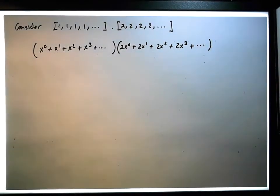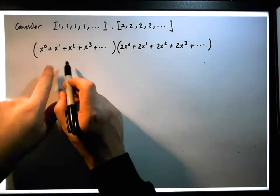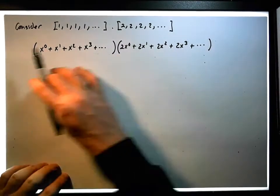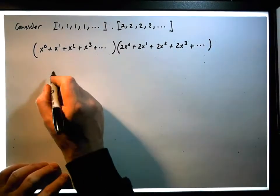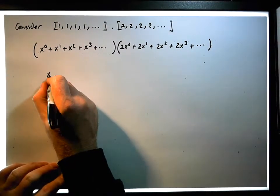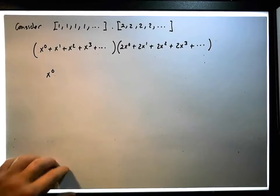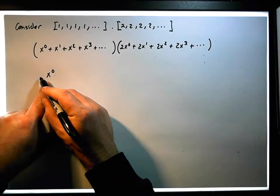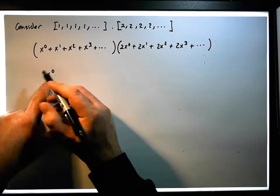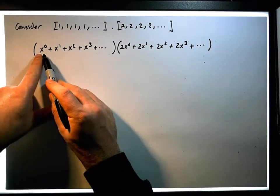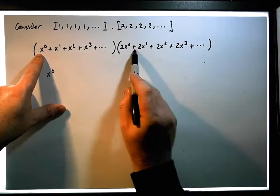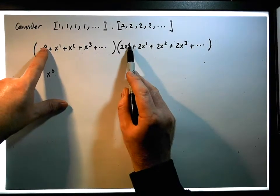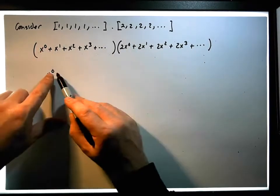Don't forget, once again, when we multiply this power series by this power series, we're going to end up with a power series. So the x⁰ term — the coefficient of it — is going to be the power functions whose exponents add to give 0.